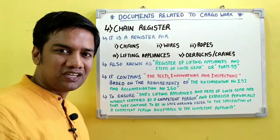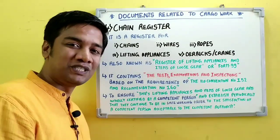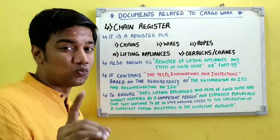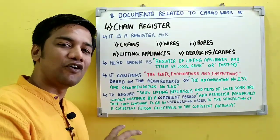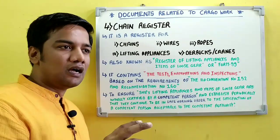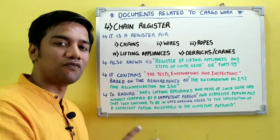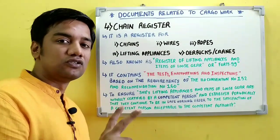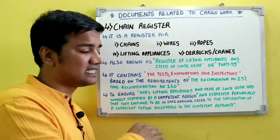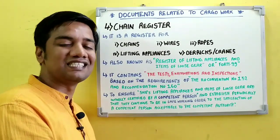Our next document is the chain register. The word itself tells you what it is — a register for chains, wires, ropes, your lifting appliances, derricks or cranes. The other name for chain register, which is regularly asked in second mate orals, is the Register of Lifting Appliances and Items of Loose Gear, also known as Form 99. This register contains the tests, examinations, and inspections of your chains, wires, ropes, lifting appliances, derricks or cranes.